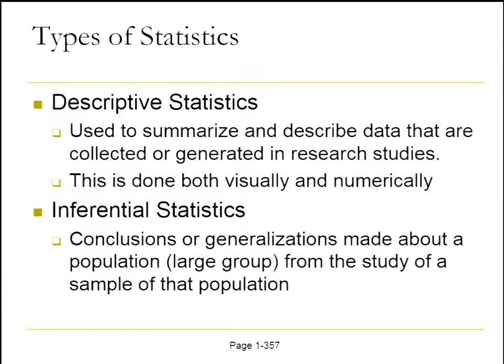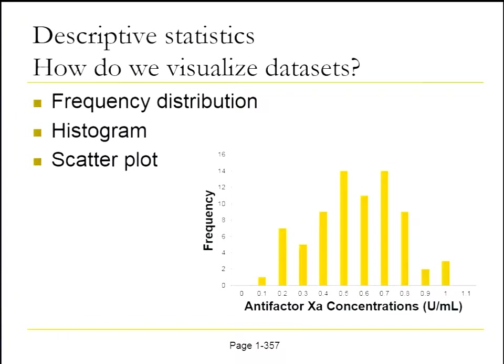We're going to start with descriptive statistics. There are three ways shown on this slide to present data: a frequency distribution, a histogram, and a scatter plot. Shown here is a frequency distribution displaying frequency of data points — in this case anti-factor Xa concentrations. We're going to figure out whether or not this frequency distribution is normally distributed. This is why it would be useful to look at these types of figures.